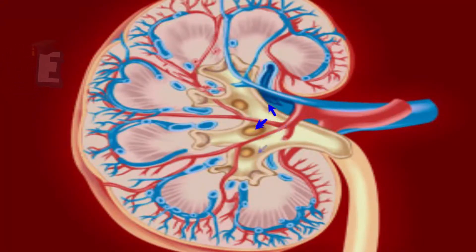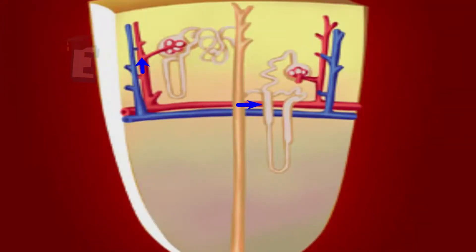The fluid filtrated by the nephron is brought by the blood to the glomerulus. Every day, there are 180 liters of water filtrated by the glomerulus. This means that the fluid inside our body is filtered 30 times per day.